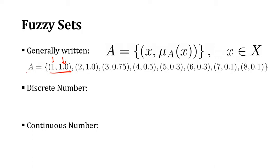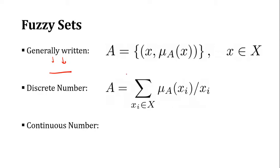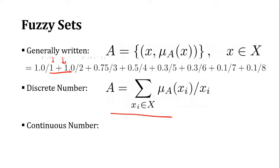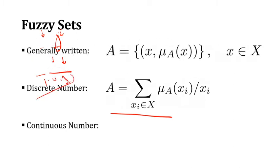In fuzzy sets, each element can be written as a pair of the element and its membership function value. For discrete numbers, you can see eight elements each with a membership function value. Instead of using a comma, you can use a slash to separate the membership function value from the element — it is not a division sign, just a separator. You can also use a comma as well. For continuous numbers, we use the integral sign.